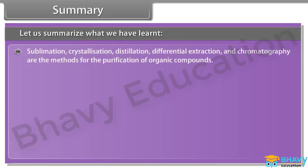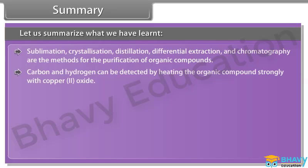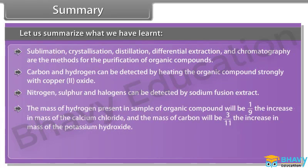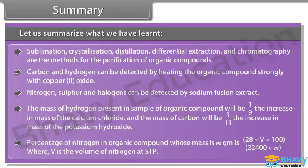Summary: Sublimation, crystallization, distillation, differential extraction, and chromatography are the methods for purification of organic compounds. Carbon and hydrogen can be detected by heating the organic compound strongly with copper(II) oxide. Nitrogen, sulfur, and halogens can be detected by sodium fusion extract. The mass of hydrogen = (1/9) × increase in mass of CaCl₂; mass of carbon = (3/11) × increase in mass of KOH. Percentage of nitrogen (Dumas) = 28 × V × 100 ÷ (22400 × M), where V is the volume of nitrogen at STP.